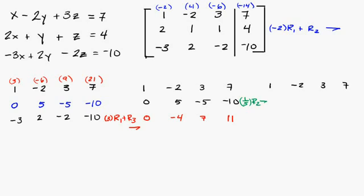1/5 times 0 is 0. 1/5 times 5 is 1. 1/5 times negative 5 is negative 1. And this is going to be negative 2. And we just go ahead and copy everything else over.